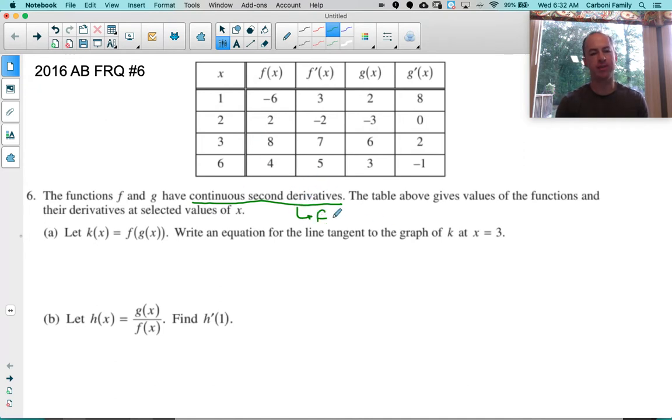If the second derivatives are continuous, that means F and G are twice differentiable. Not only are F and G differentiable, so are F prime and G prime. I'm going to make a note that both functions are twice differentiable because that may come in handy if we have to use a theorem.